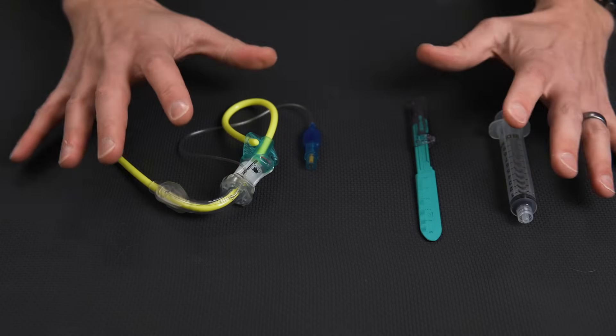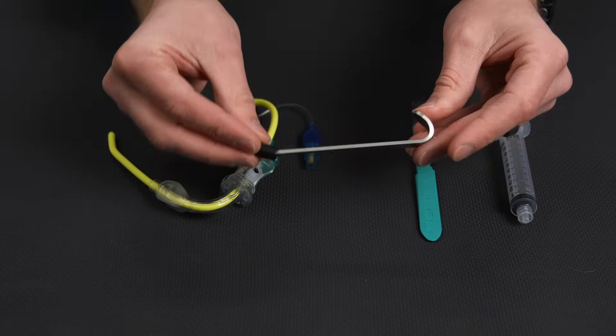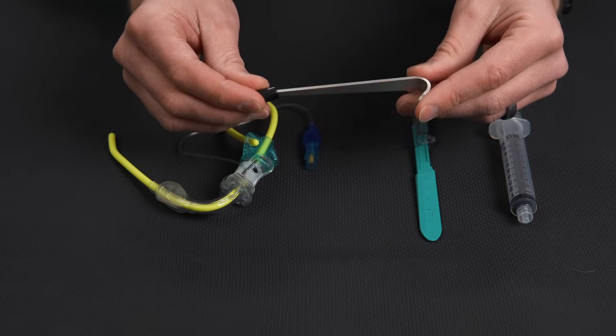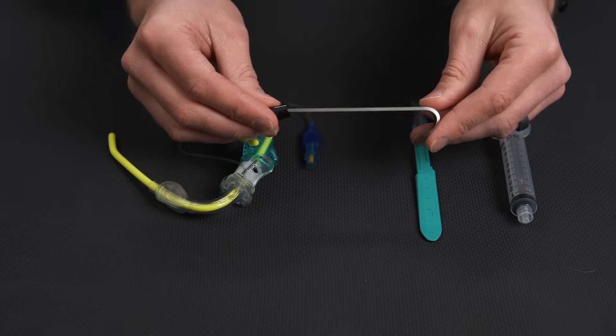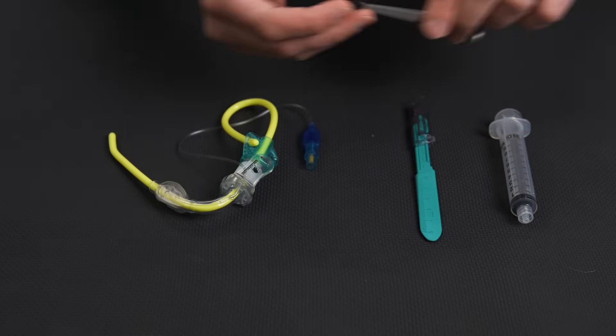There are a lot of different devices for doing this procedure. You can have a tracheal hook, which can be used to make this a little easier. I found that this kind of complicates the procedure and I don't generally use it, although we can talk about its use a little bit later on in this video.